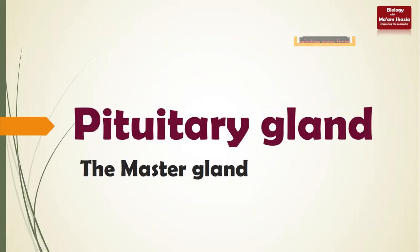The first gland is the pituitary gland, also called the master gland. It is called the master gland because it controls the secretions of all other glands - adrenal, thyroid, testes, ovaries. The pituitary gland hangs from the base of the brain and is enclosed by bone. It is present in the brain along with the hypothalamus.